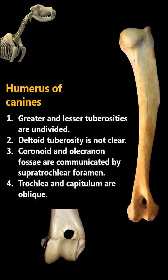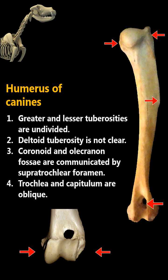In the dog, the greater and lesser tuberosities are undivided, the deltoid tuberosity is not clear, the coronoid and olecranon fossae are communicated by a supratrochlear foramen, and the trochlea and capitulum are oblique.